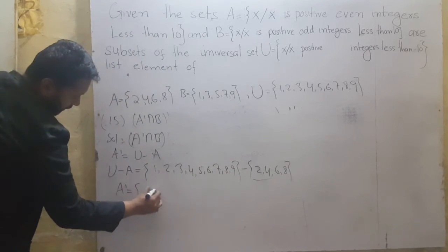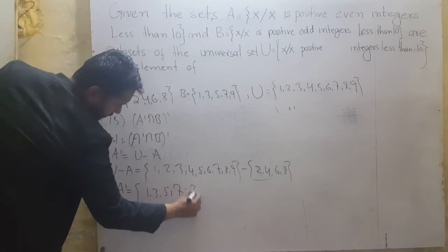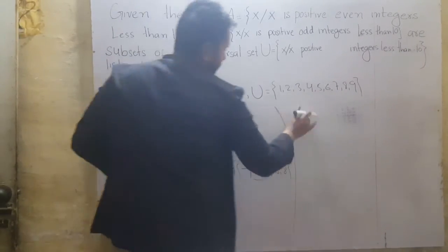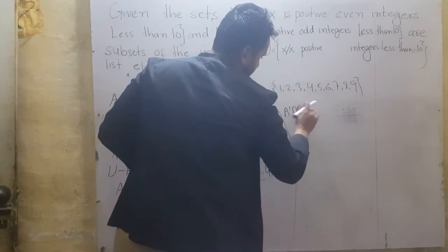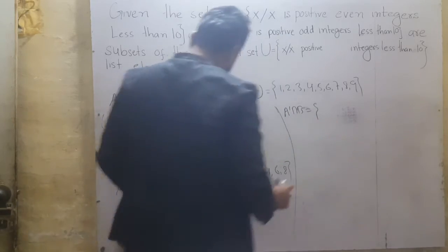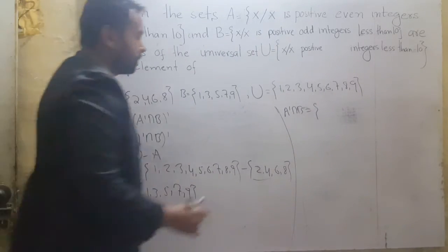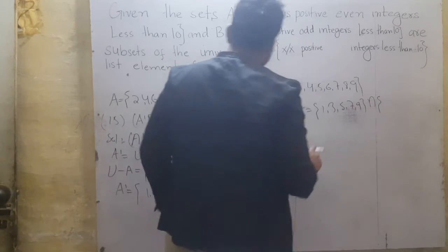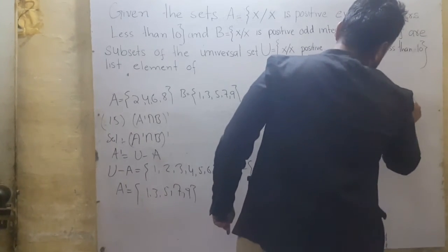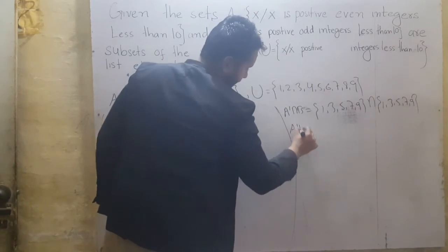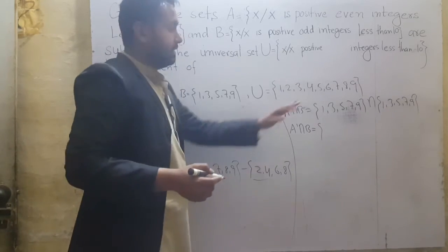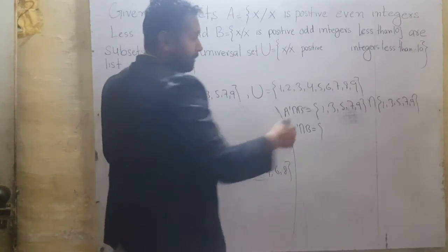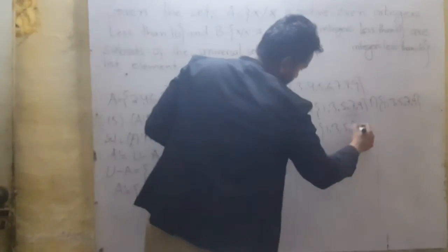A complement मिला — odd numbers remain: {1, 3, 5, 7, 9}. Now intersection करेंगे B के साथ. A complement intersection B: A complement = {1, 3, 5, 7, 9} and set B = {1, 3, 5, 7, 9}. In intersection, we note only the same elements from both sets — all elements are common, so result is {1, 3, 5, 7, 9}.